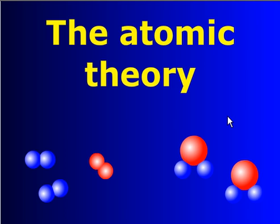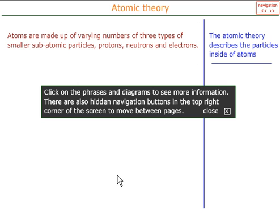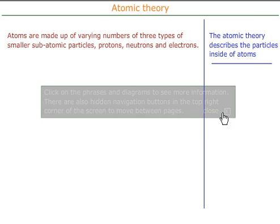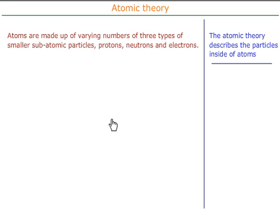The Atomic Theory. Atomic Theory explains to us that atoms are made up of several types of smaller subatomic particles. We call these protons, neutrons and electrons.